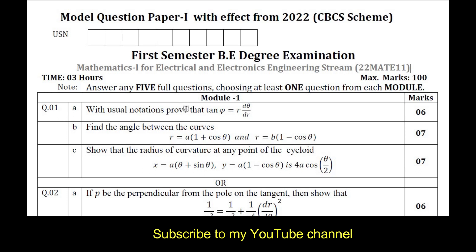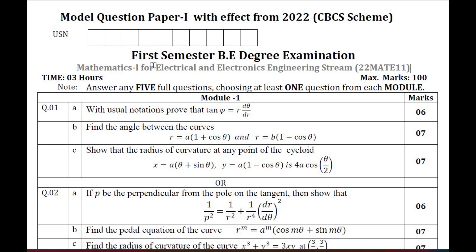Hello, my dear students. I welcome you all to SVK Tutorials. Those who are not subscribed to my YouTube channel, do subscribe. In this session, I am going to discuss the Model Question Paper 1 for the branch called Electrical and Electronics Engineering stream with subject code 22MATE11. The Model Question Paper has been released by VTU as Paper 1 and Paper 2 — two sets. First, I am going with Model Question Paper 1.